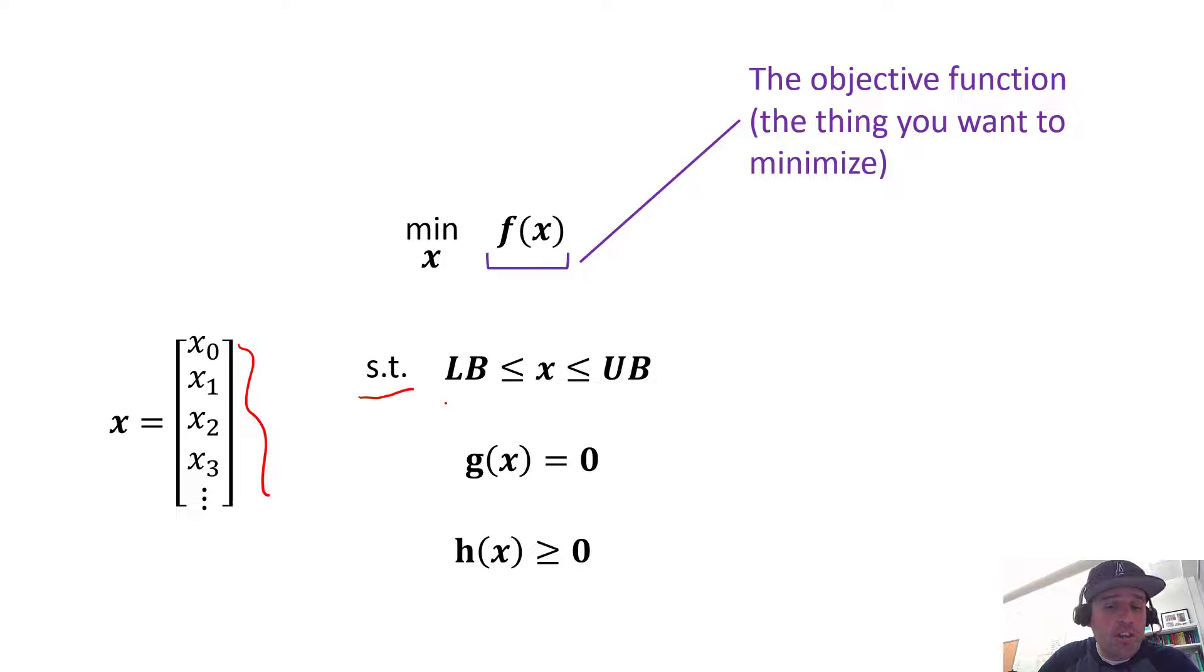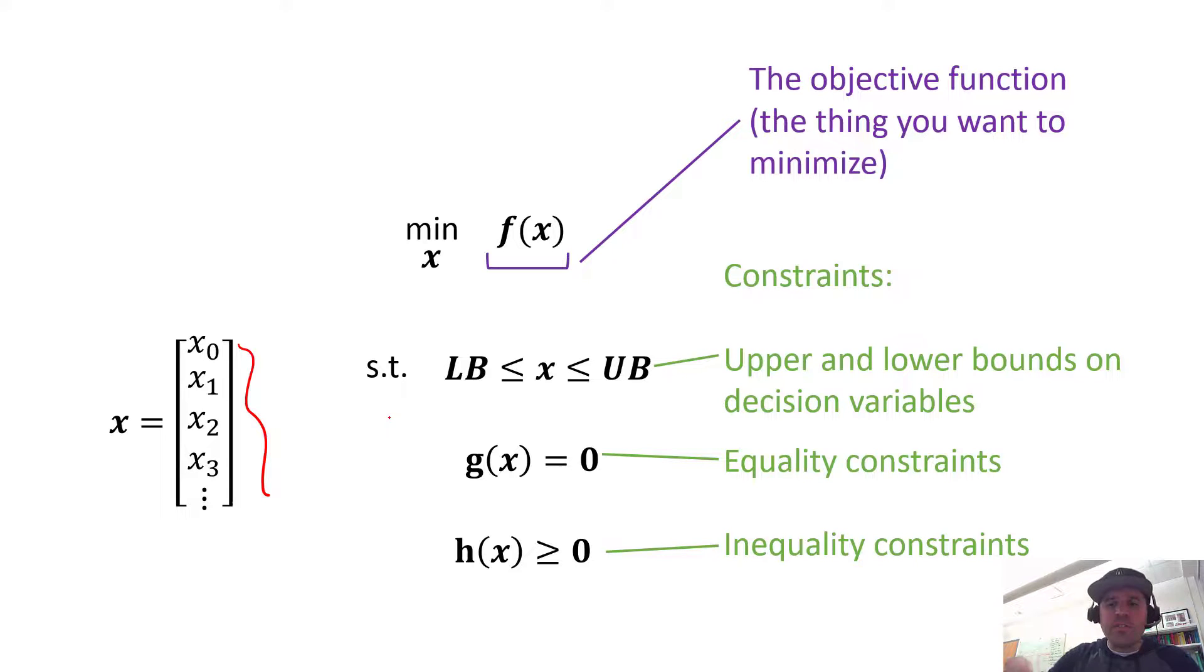Constraints come in different forms. These are bounds on our decision variables. If your decision variable is the throttle position of your car, it has a natural bound between 0 and 100 percent. That's a physical limitation - you can't have your throttle valve open more than 100% or closed more than 0%. You tell your optimization problem about these physical realities so it doesn't try to find a solution where your throttle position is 4000%, which isn't physically realizable.